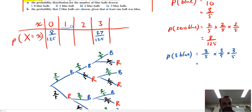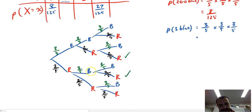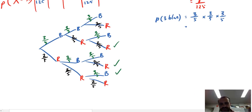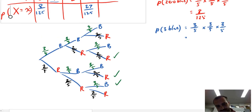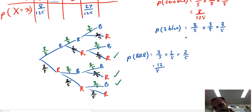What's the probability of pulling out one blue ball? Looking at the options, we could end up on the branch blue, red, red; or red, blue, red; or red, red, blue — three options. The probability of blue, red, red is three-fifths times two-fifths times two-fifths, which is twelve in one hundred and twenty-five.